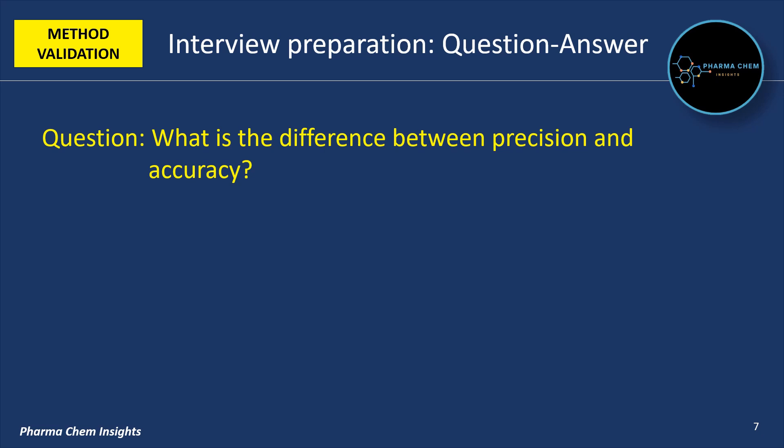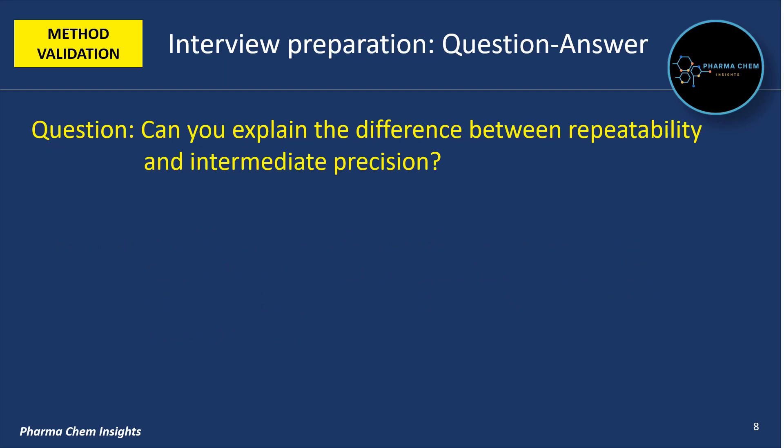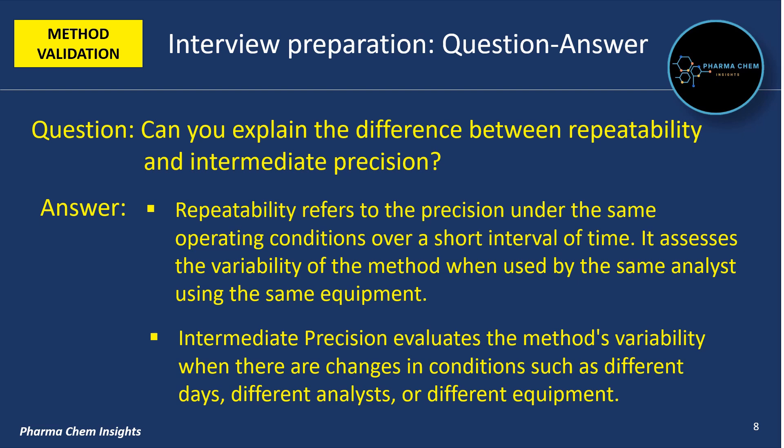What is the difference between precision and accuracy? Precision refers to the consistency of results when the method is repeated under the same conditions, while accuracy refers to how close the test results are to the true value. Next: can you explain the difference between repeatability and intermediate precision? Repeatability refers to the precision under the same operating conditions over a short interval of time, assessing variability when used by the same analyst under the same equipment, while intermediate precision evaluates the method's variability when there are changes in conditions such as different analysts or different equipment.